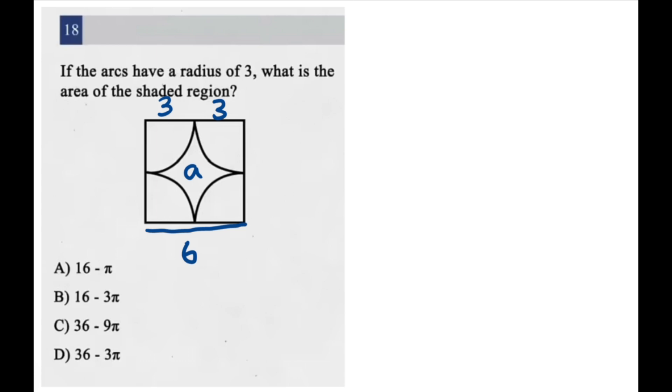Now we can find A by subtracting the area of these quarter circles from the total area of the whole square. So let's get the area of the square first. We can do that pretty easily just by squaring the side length, which is 6. So 6 squared is equal to 36. Let's circle that. That is the area of our square.